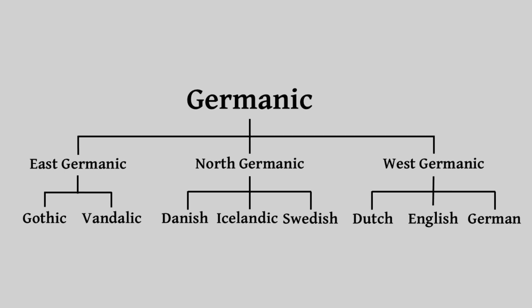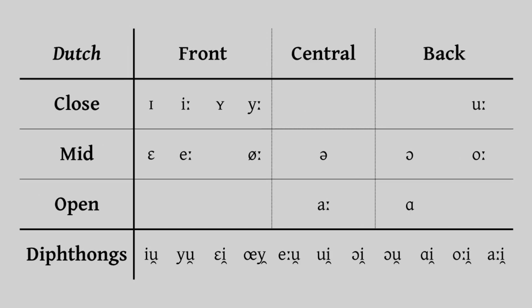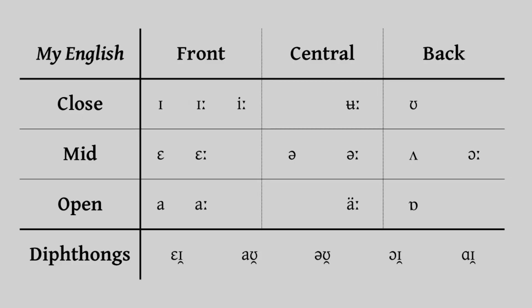The Germanic languages are known for having a lot of vowels. In Swedish there are 18, in Dutch there are 24, and my own dialect of English has 20.